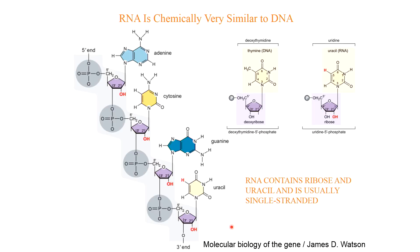RNA molecules differ from DNA in three main ways. First, the backbone of RNA contains ribose rather than 2'-deoxyribose. Second, RNA contains uracil instead of thymine — uracil has the same single-ring structure as thymine except that it lacks the methyl group at position 5. Third, RNA is usually found as a single polynucleotide chain.